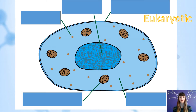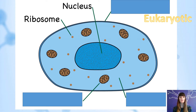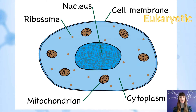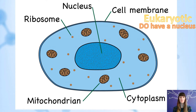So our first label is the ribosome. The second is the nucleus. The third is the cell membrane. The fourth is the mitochondria. And finally we have the cytoplasm. Now these five things are really what you need to know, certainly for the Foundation GCSE paper and KS3. Now let's talk a little bit about what all of those things do. Just to remember that a eukaryotic cell does have a nucleus, and that will be important later on.